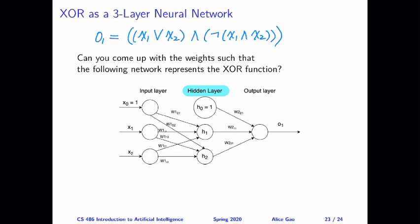We can do the following. So the XOR function between X1 and X2 is equivalent to X1 or X2. That includes three cases, right? But we need to exclude the case when X1 and X2 are both true.